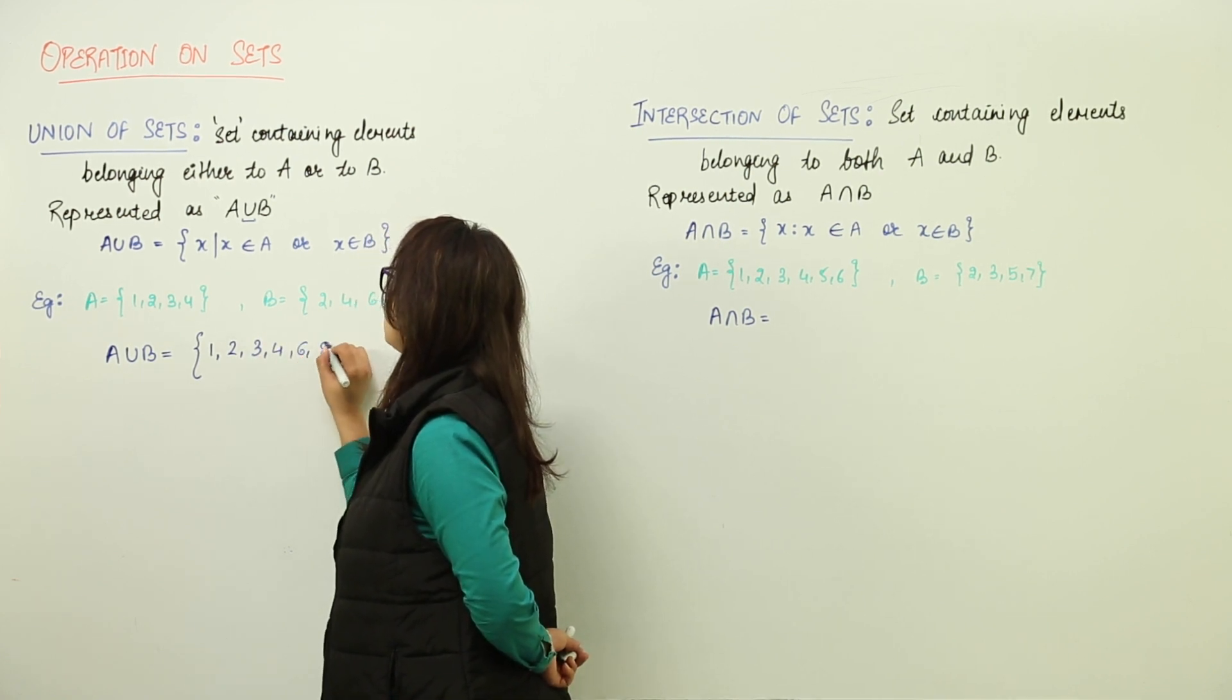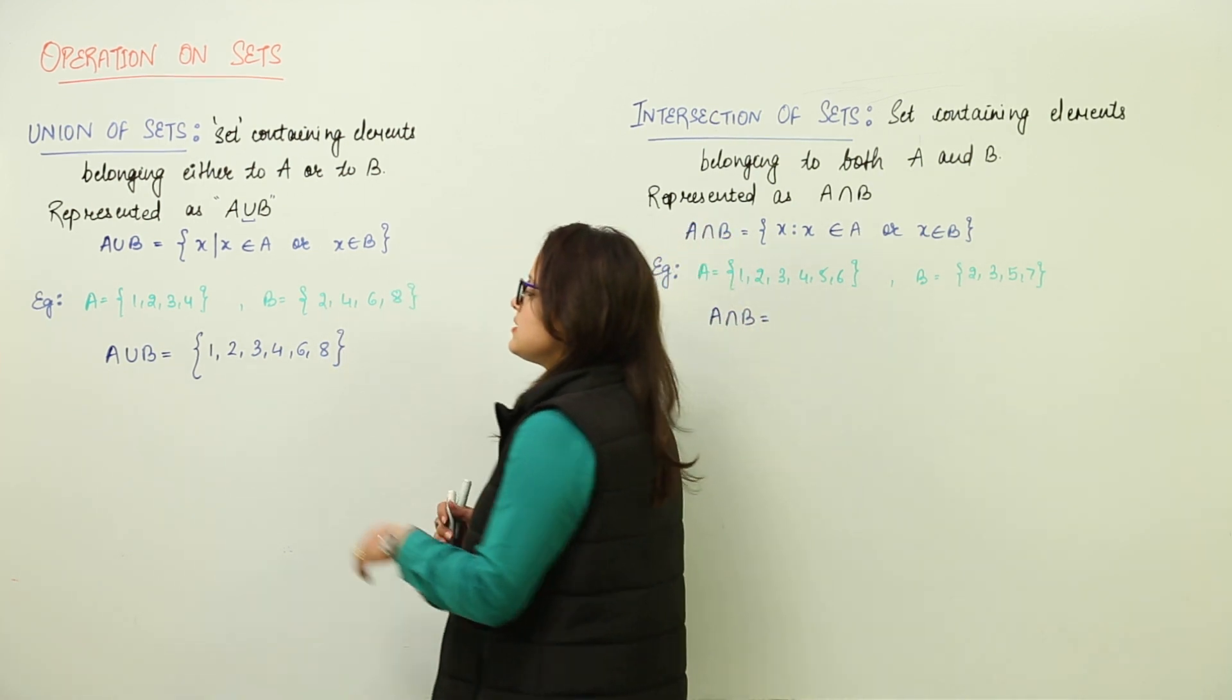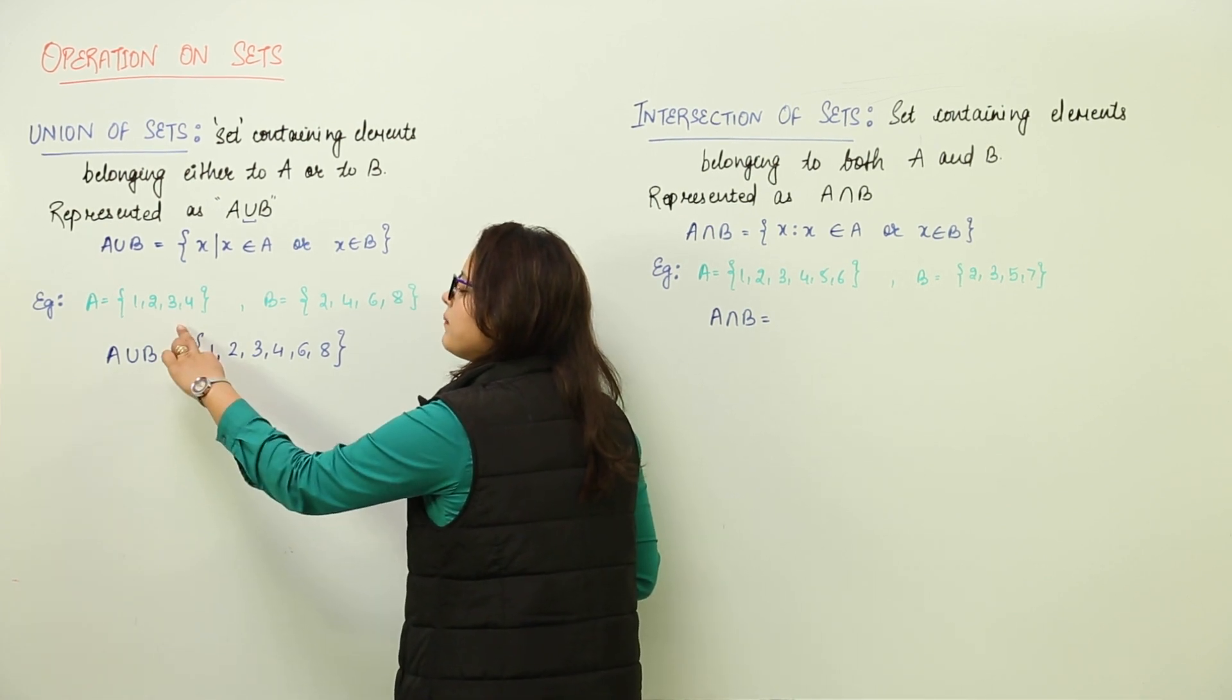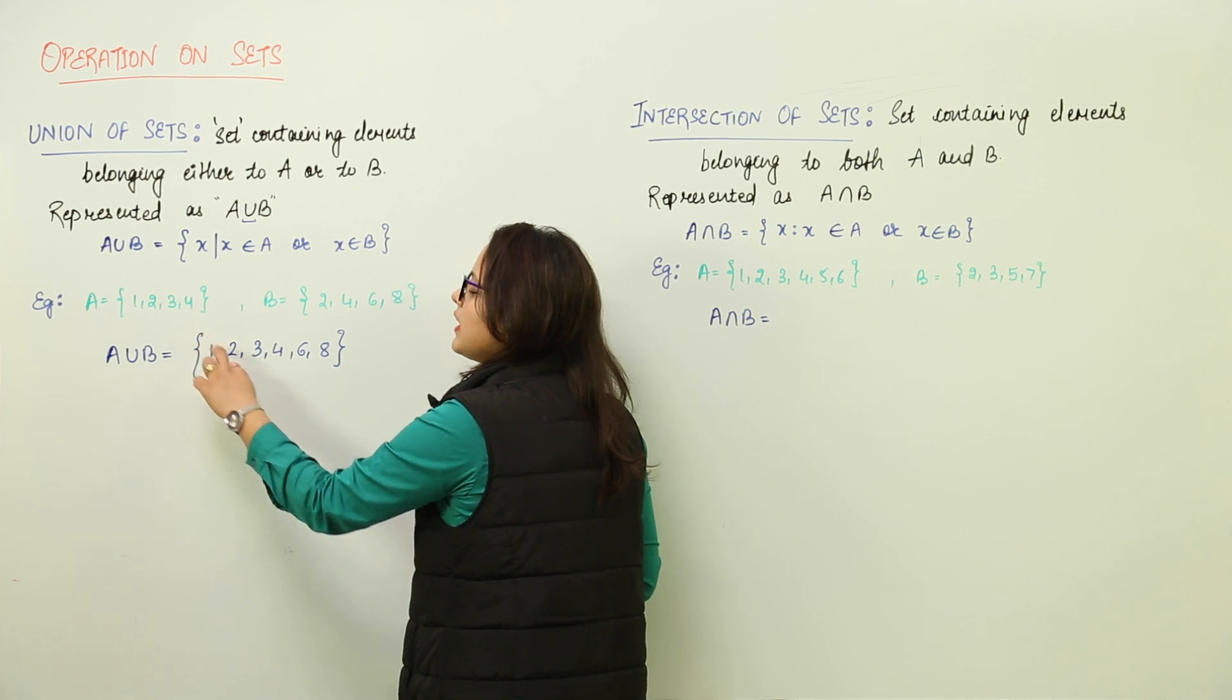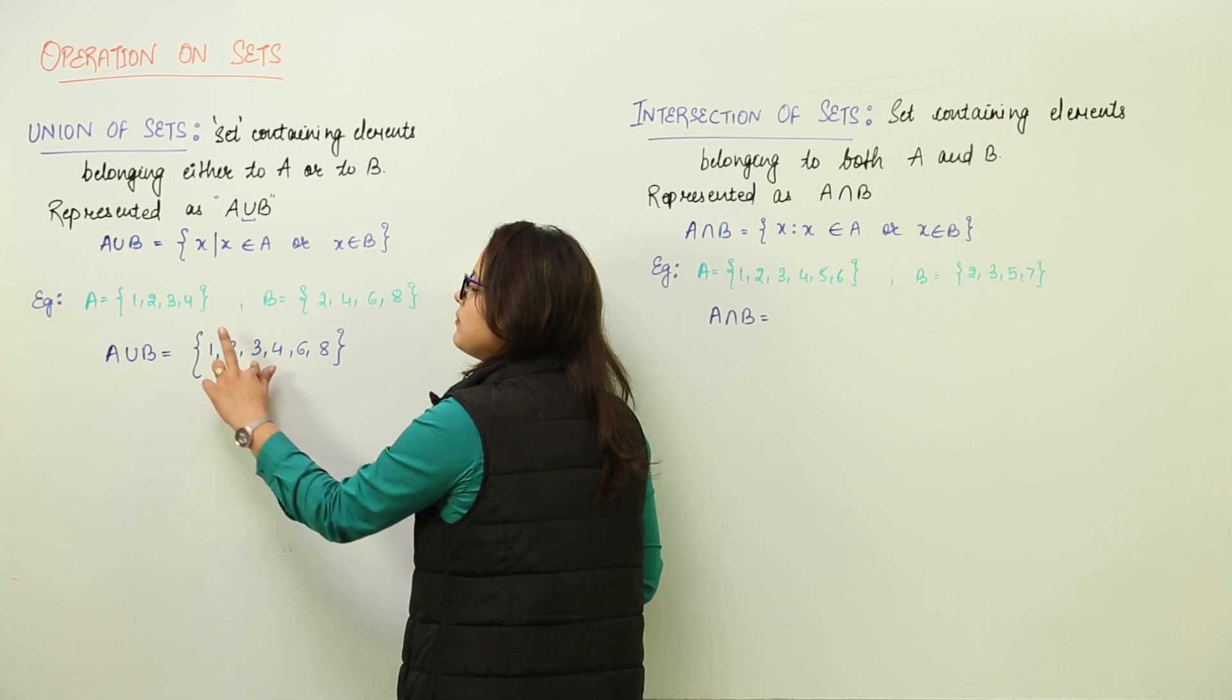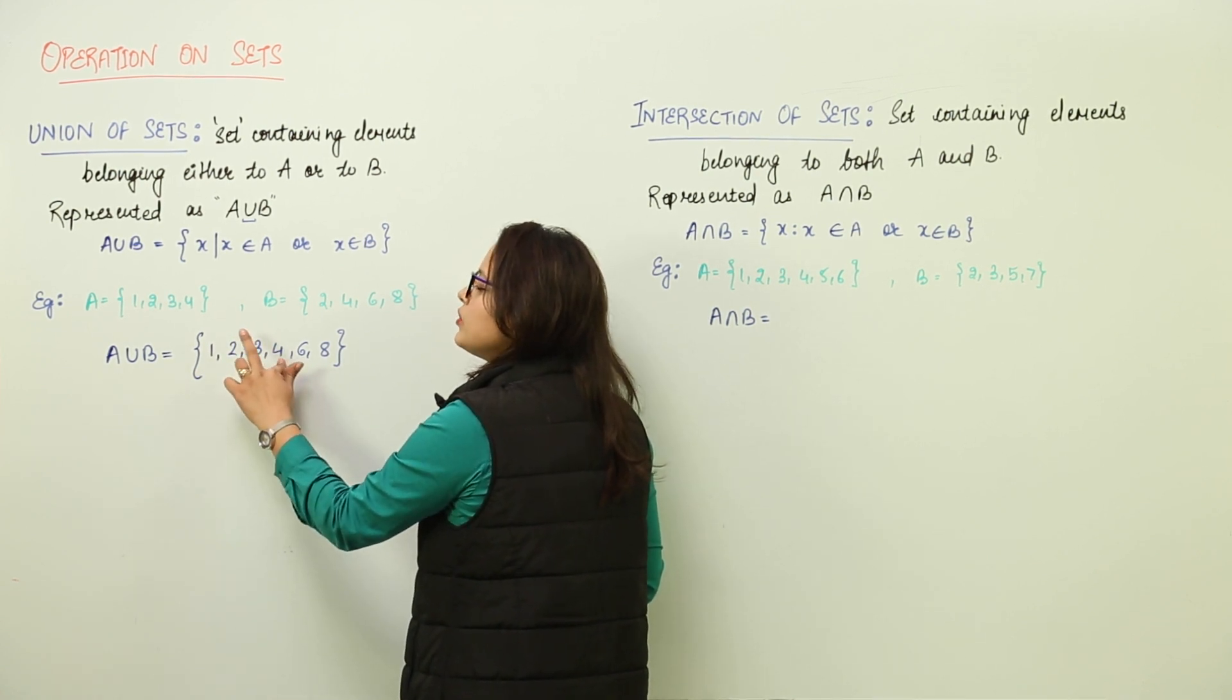You can check that each element of this set: 1 is part of A but not B, 2 is an element of A as well as B, 3 is an element of A but not B, and 4 is an element of both A and B.